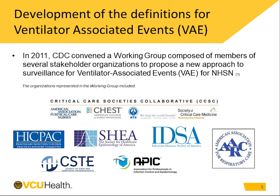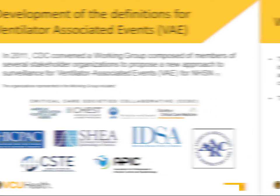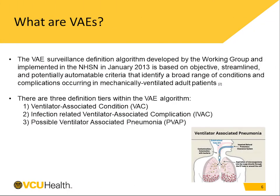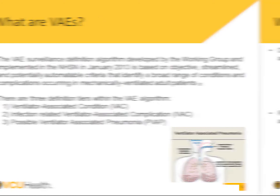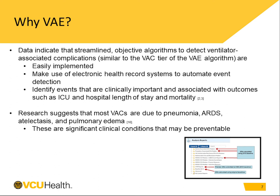The current definition for ventilator-associated events was developed by a working group made up of professionals from several organizations. The ventilator-associated event definition is an algorithm based on objective, streamlined, and potentially automatable criteria. The three definition tiers are: ventilator-associated condition, infection-related ventilator-associated complication, and possible ventilator-associated pneumonia. The algorithm is designed to make use of the electronic medical record to automate event detection. Data indicates that algorithms such as this may identify events clinically important and associated with outcomes such as ICU and hospital length of stay and mortality.